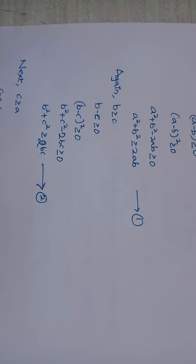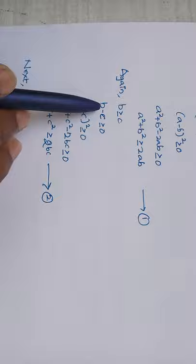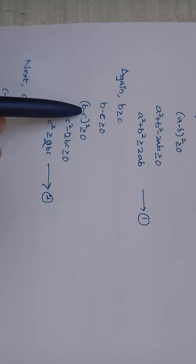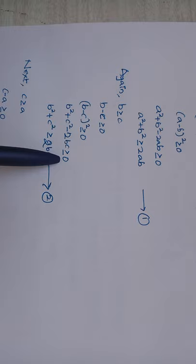Again, b ≥ c. If b ≥ 0 and c ≥ 0, then b ≥ c. After subtracting c on both sides, b - c ≥ 0. Squaring both sides: (b-c)² ≥ 0. After expanding: b² + c² - 2bc ≥ 0. After adding 2bc to both sides, b² + c² ≥ 2bc. I take this as equation number 2.